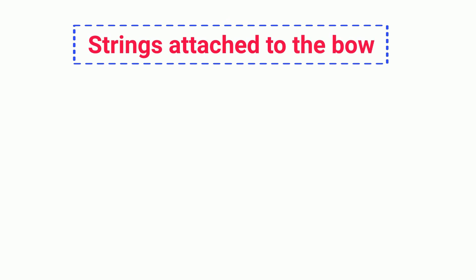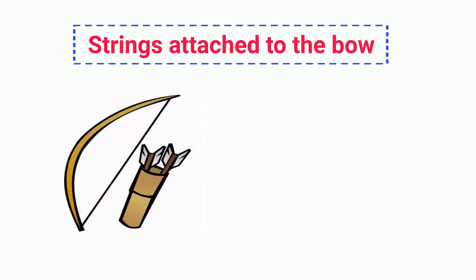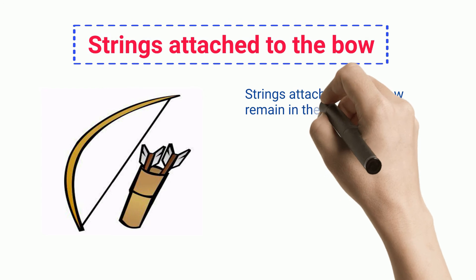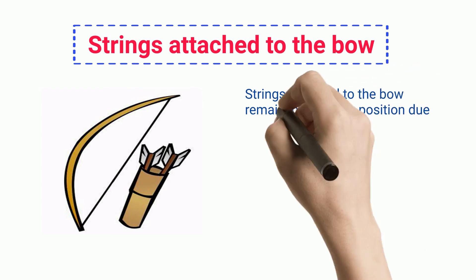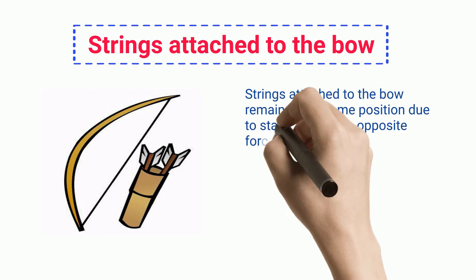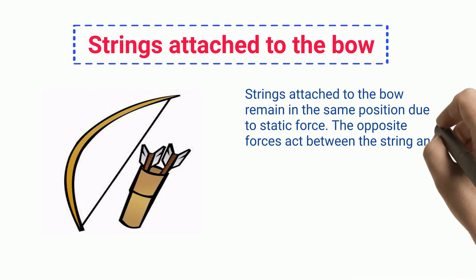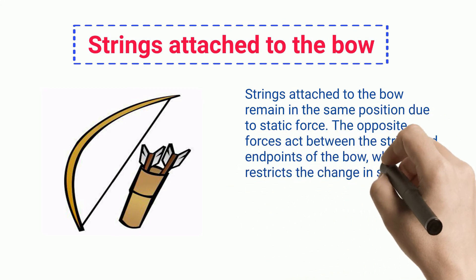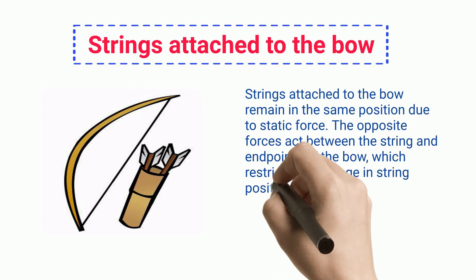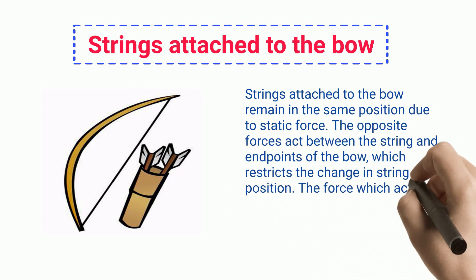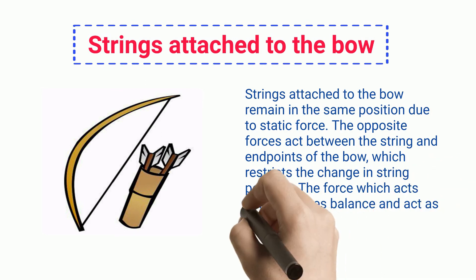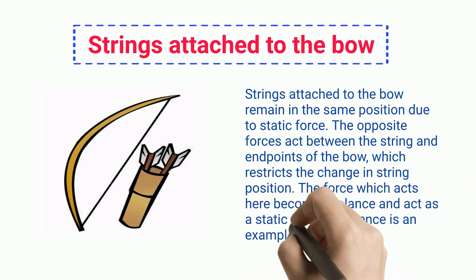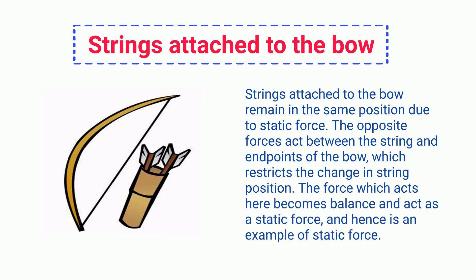Strings attached to the bow remain in the same position due to static force. The opposite forces act between the string and the endpoints of the bow, which restricts the change in string position. The forces acting here become balanced and act as a static force, making it an example of static force.